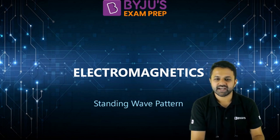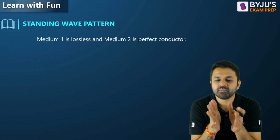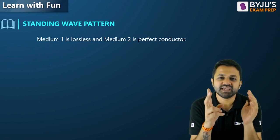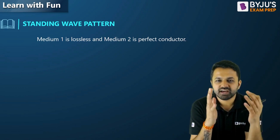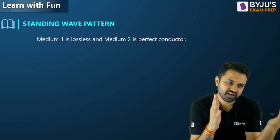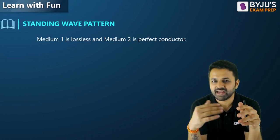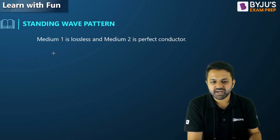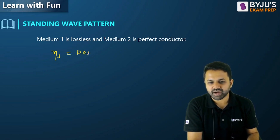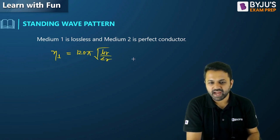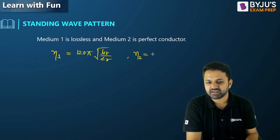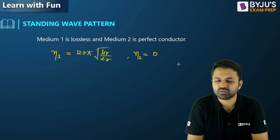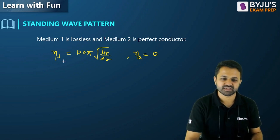I am considering two media because to form a standing wave we need at least two waves. One medium I am considering as lossless and the second medium as a perfect conductor. For the lossless medium, the intrinsic impedance is given by 120π√(μr/εr). When the medium is a perfect conductor, its impedance is considered to be approximately 0.